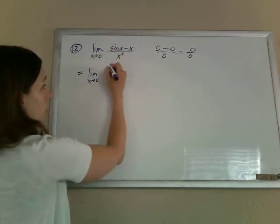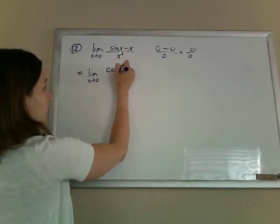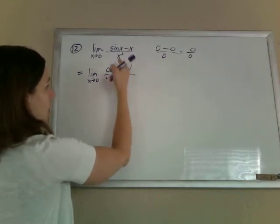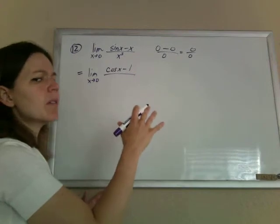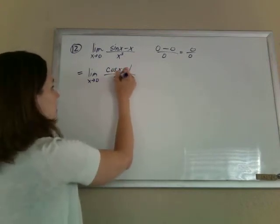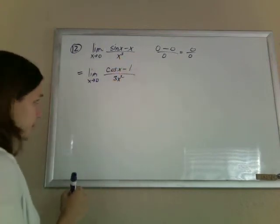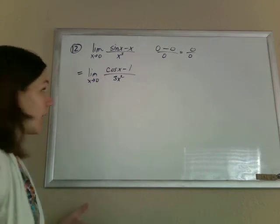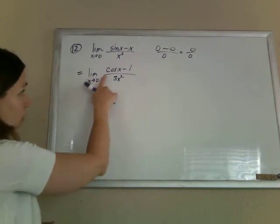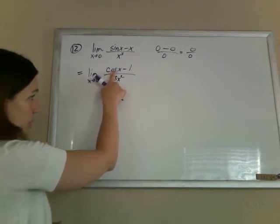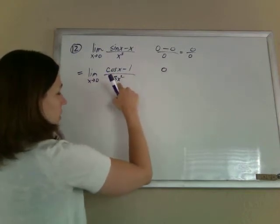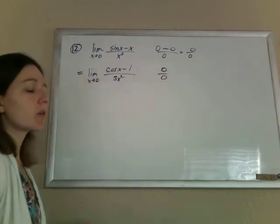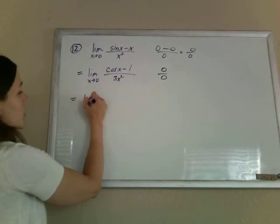So the derivative of the top is just cosine of x minus 1, and the derivative of the bottom is 3x². Derivative of the top, derivative of the bottom. And now we evaluate again. So if I plug in 0 now, cosine of 0 is 1, minus 1 is 0, 3 times 0² is 0. We get 0 over 0 again, so we're going to do L'Hopital's rule again.